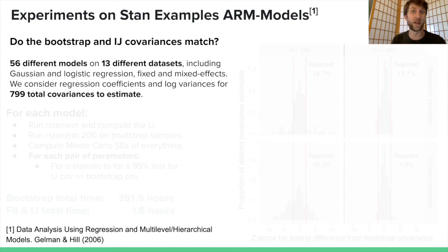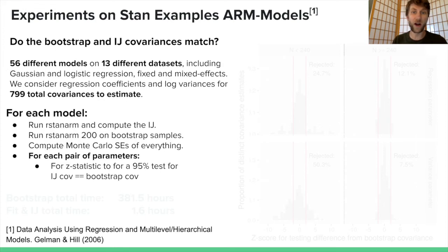In this case, it's not a simulation, so we don't have a ground truth. We're going to see whether the IJ covariances, which can be estimated from a single run of MCMC, match the computationally expensive bootstrap covariances. For each model, we're first going to run RStanARM and compute the IJ covariance. Then we're going to compute 200 bootstrap samples and run RStanARM on each. We're going to compute Monte Carlo standard errors of everything. For each pair of parameters, we're going to take the frequentist covariance, as estimated by the IJ and by the bootstrap, and form a z statistic for testing at a level of 95% whether those two covariances are the same.